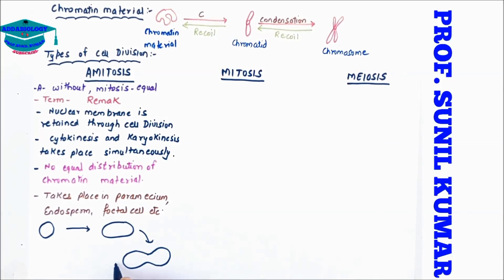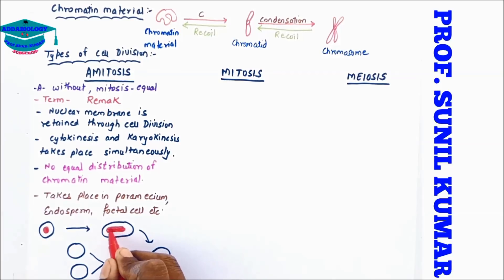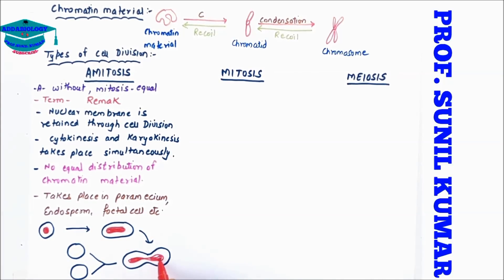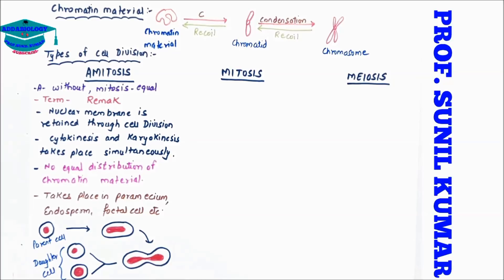Amitosis takes place in paramecium, endosperms, and fetal cells. It is a type of binary fission where two daughter cells are formed from the parent cell. In this division, the daughter cells formed may or may not contain an equal amount of chromatin material.